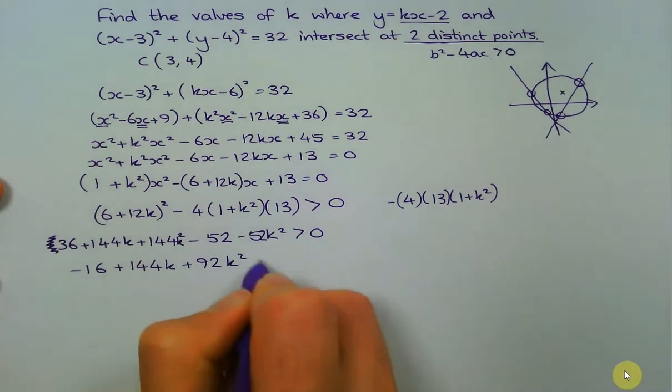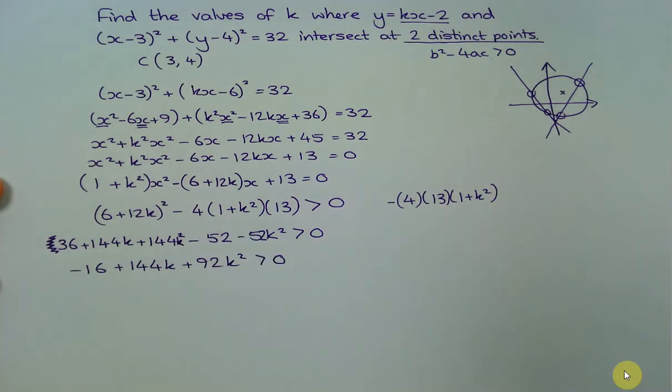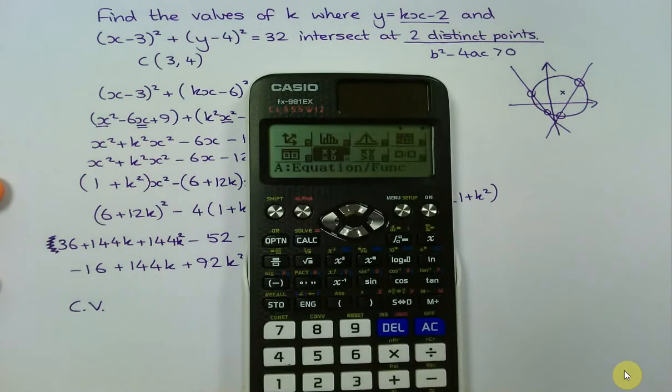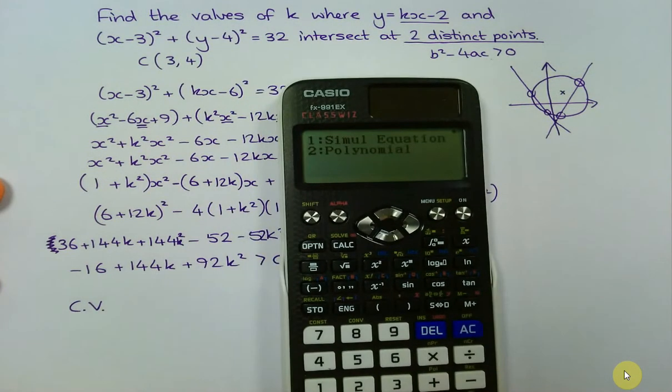Okay, and that's greater than 0, so we have got a quadratic inequality. So at this point we would solve, find our critical values. I'm just going to use my calculator to do this because it takes too long. So if you haven't got one of these calculators yet, you really do need to get one. I'm just going to plug in those coefficients: 92, 144, and -16.